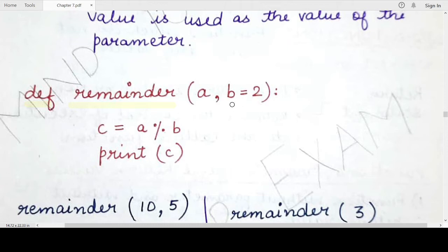One parameter can have a default value, or more than one, or all the parameters of a function can have a default value. Those values can be of any data type — they can be the same or different. There are no restrictions on the kind of default value you can assign, just like any kind of argument can be passed to a parameter. You must remember that this is the syntax: you specify the default value in the function definition header.